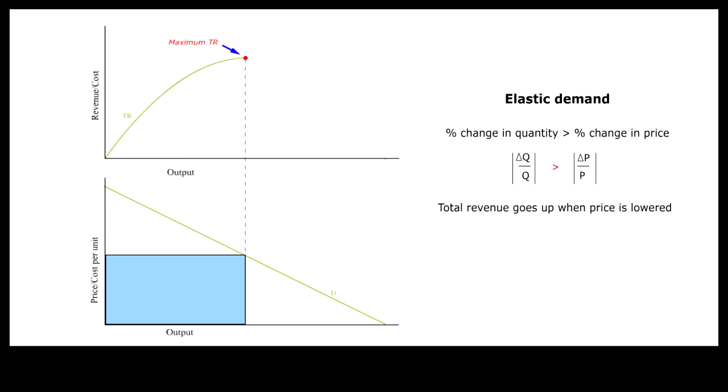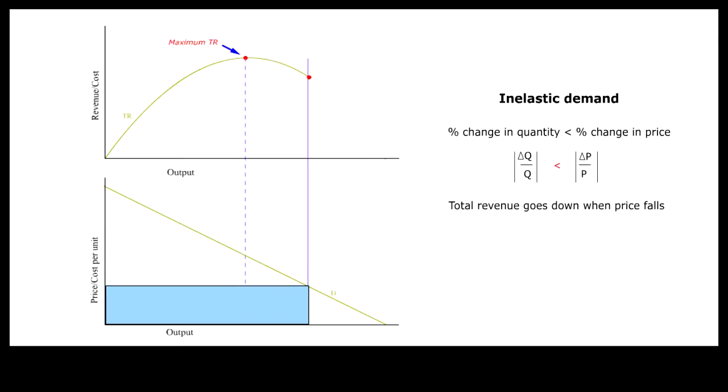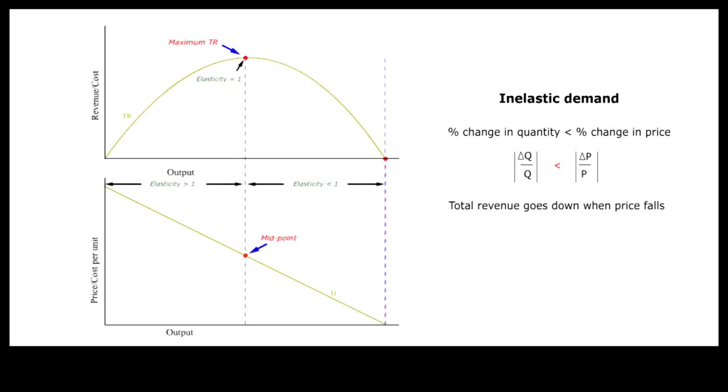After maximum total revenue is reached, further decrease in price would lead to a decline in total revenue, because the percentage change in quantity demanded is smaller than the percentage change in price.